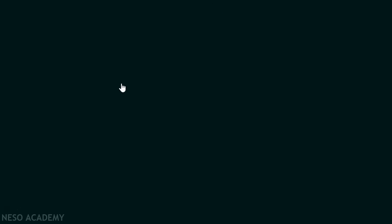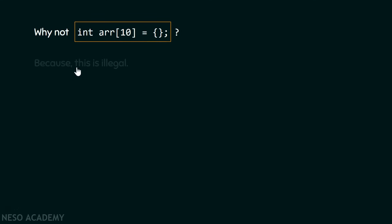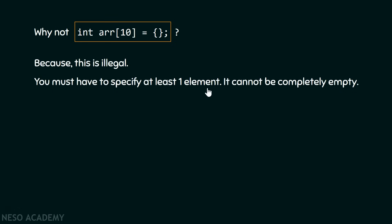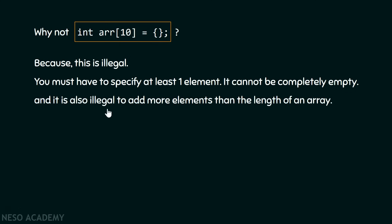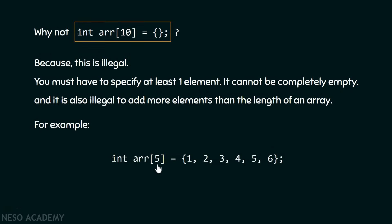But why not leave the flower brackets completely empty without even specifying a single element? Because this is illegal — you must specify at least one element; the brackets cannot be completely empty. It is also illegal to add more elements than the length of the array. For example, specifying a length of five but entering six elements is illegal. You cannot add more elements than the length specified.